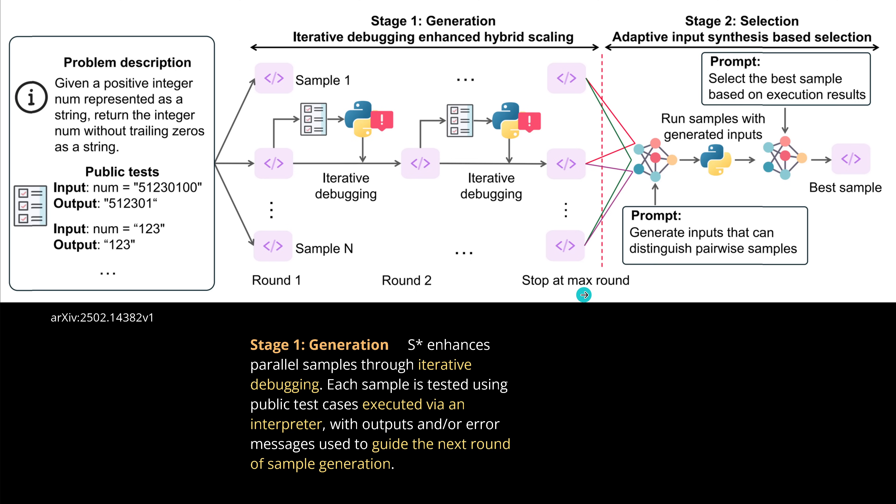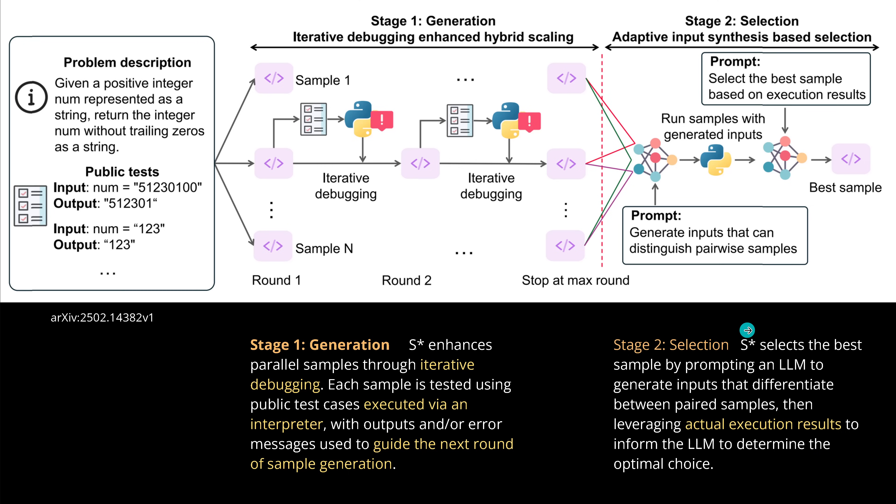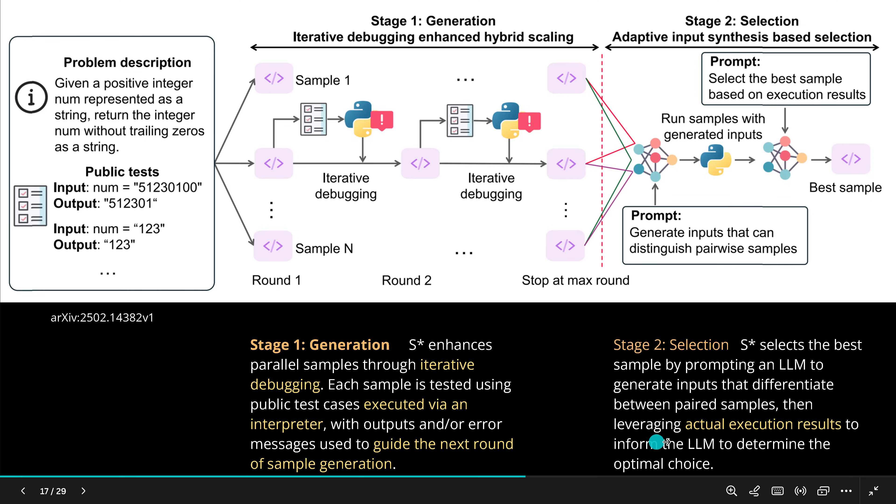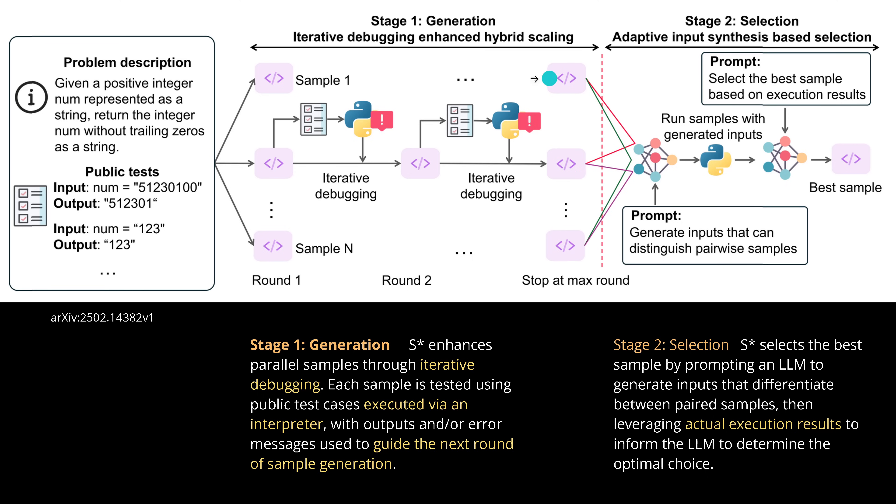Going through multiple rounds, you define the max round for your time budget. Then stage two, phase two: S-Star selects the best sample by prompting an LLM to generate inputs that differentiate between the paired samples, and then leveraging the actual execution result to inform the LM to determine the optimal choice. This is so easy in code because iterative debugging with our interpreter immediately tells us if it's working - yes or no. Do we achieve what we set out to do? Yes or no. Couldn't be easier.